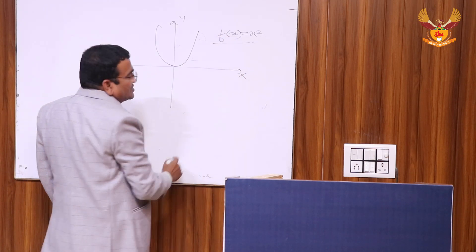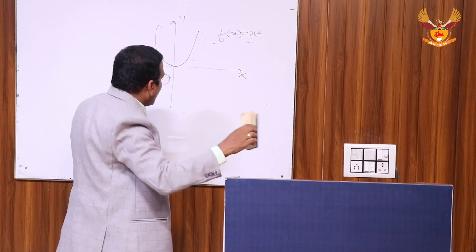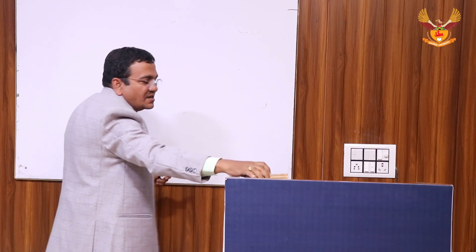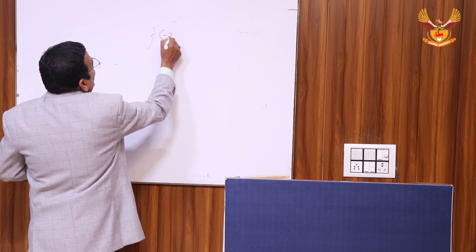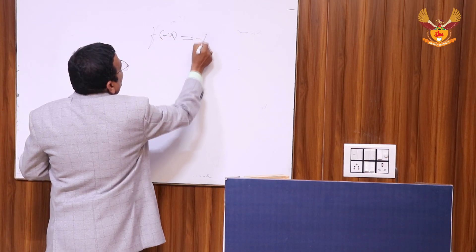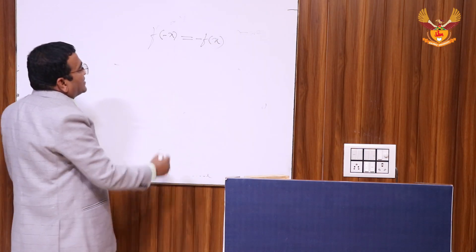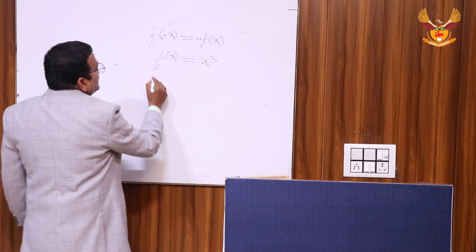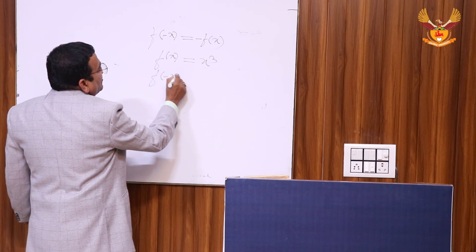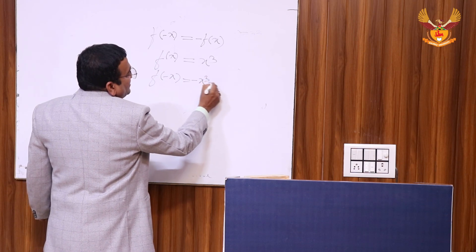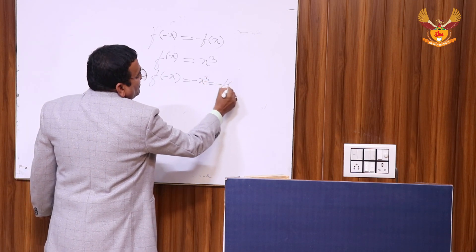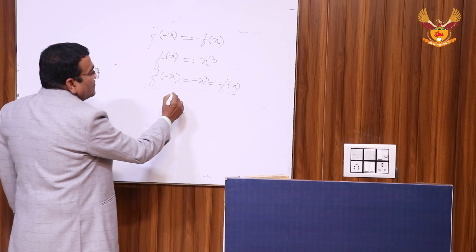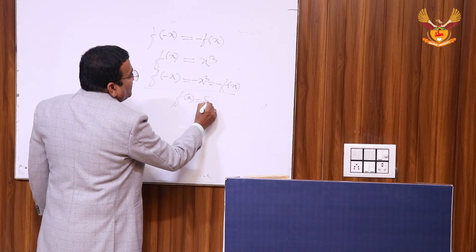Similarly, we can define what is the odd function. If any function satisfies f(-x) = -f(x), then f(x) is called the odd function. For example, f(x) = x³, then f(-x) = (-x)³ = -x³, which means f(-x) = -f(x). So this is the odd function. Similarly, sin x, f(x) = x, etc. are called odd functions.